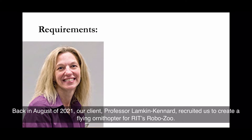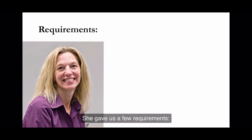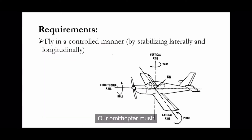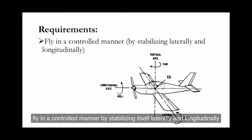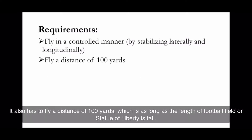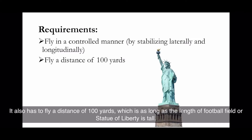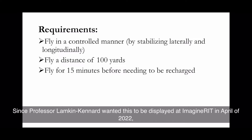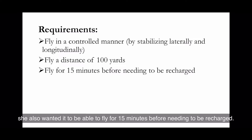Back in August of 2021, our client Professor Lambkin Canard recruited us to create a flying ornithopter for RIT's Robotic Zoo. She gave us a few requirements: our ornithopter must fly in a controlled manner by stabilizing itself laterally and longitudinally. It also has to fly a distance of 100 yards, which is as long as a football field or as tall as the Statue of Liberty.